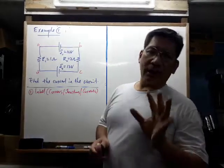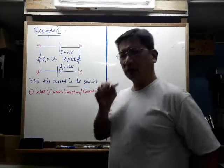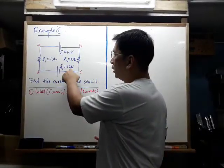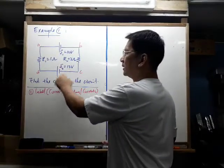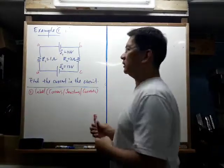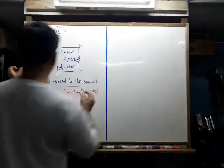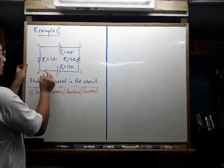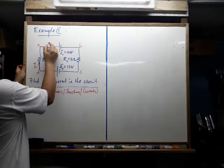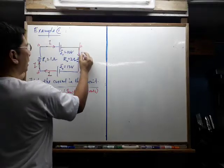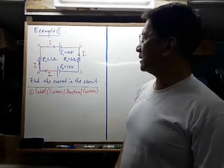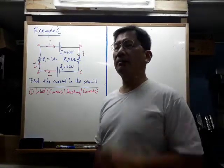The trick in labeling the current is by looking at which battery is more powerful. The most powerful battery is 12 volts compared to 10 volts, so it's going to push the current out from its positive terminal. That means current starts here, goes in this direction — I — then goes up, into the battery, and comes back down. That is how we label the current — that is step number one: labeling.